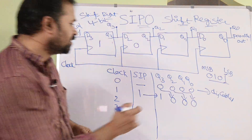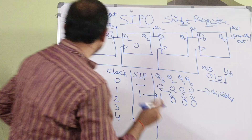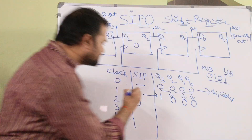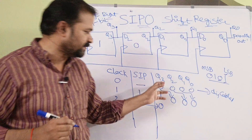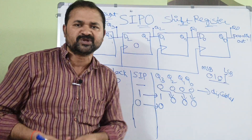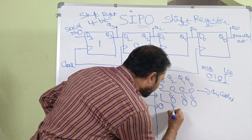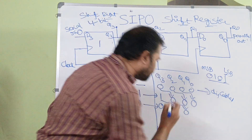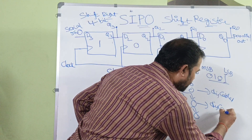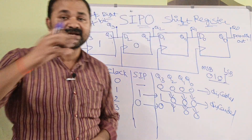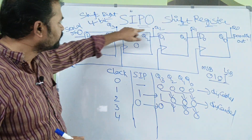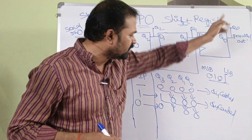Now let us apply the second clock pulse. The next bit is 0, so serial input is 0. This 0 is placed at Q3 (MSB position). Performing shift-to-right: the 1 shifts one position to the right, the 0s shift right, and the rightmost 0 is discarded. After the second clock pulse, Q3=0, Q2=1, Q1=0, Q0=0.